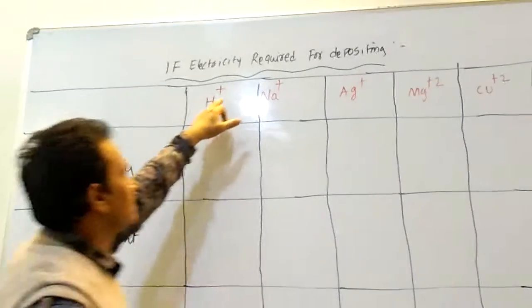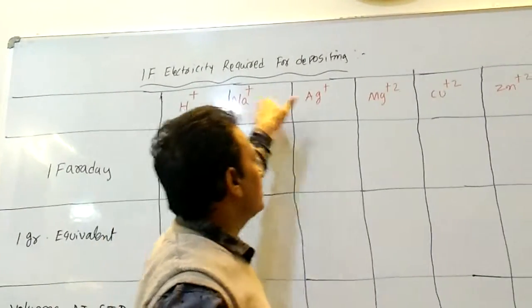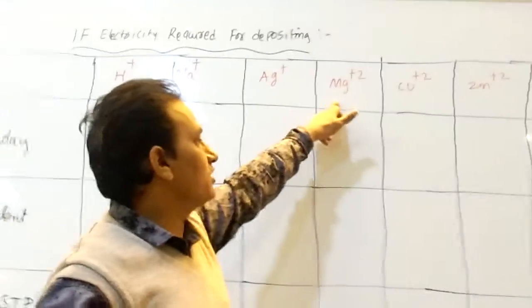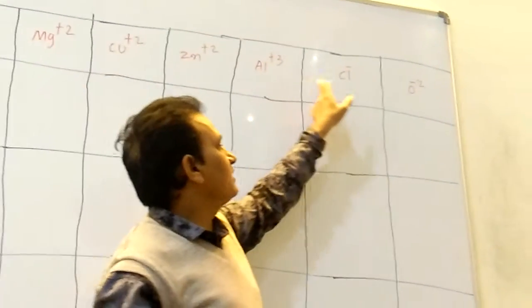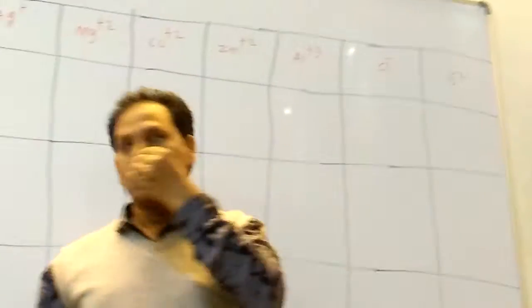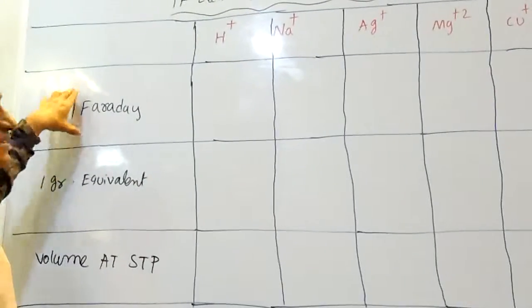Here I am taking H+, Na+, Ag+ silver, Mg2+, Cu2+, Zn2+, Al3+, Cl- and O2-. How much Faraday electricity is required?